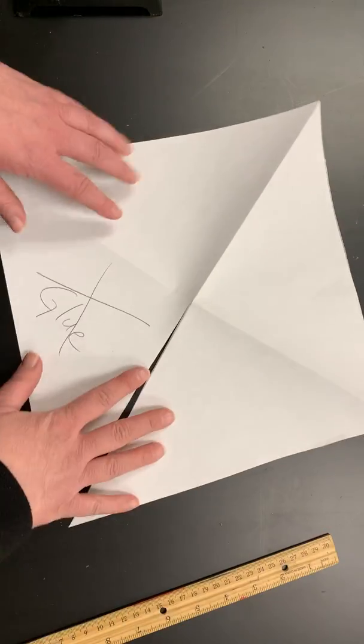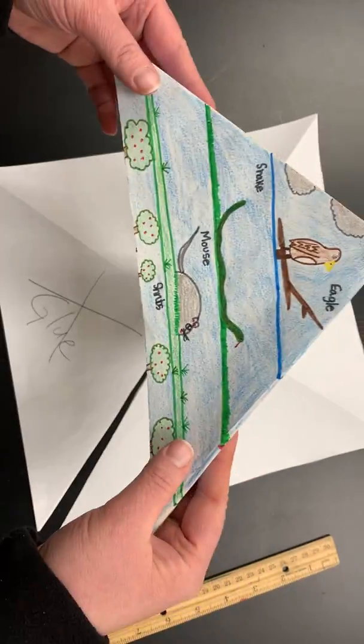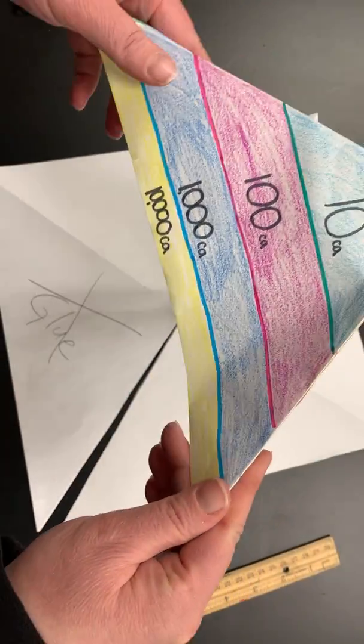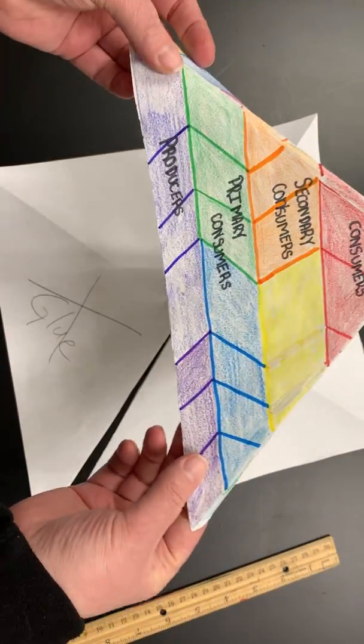So on your three sides, you're going to have one side is going to have the organisms within the pyramid. The other side is going to have the amount of energy at each trophic level, and then your third side is going to have the names of those trophic levels.